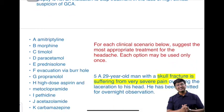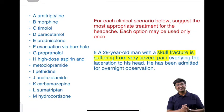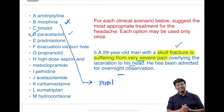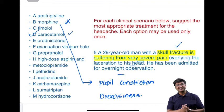The last scenario: a 59-year-old man with a skull fracture has severe pain over the laceration and is admitted for overnight observation. An analgesic is needed. Morphine cannot be given in head injury because opioids cause pupillary constriction and drowsiness, which interfere with neurological observation. Therefore, paracetamol should be given instead of morphine.